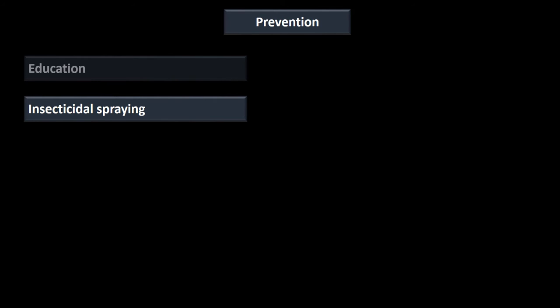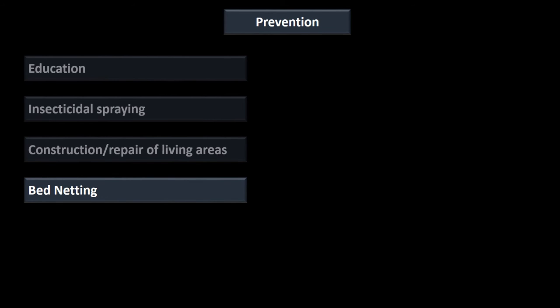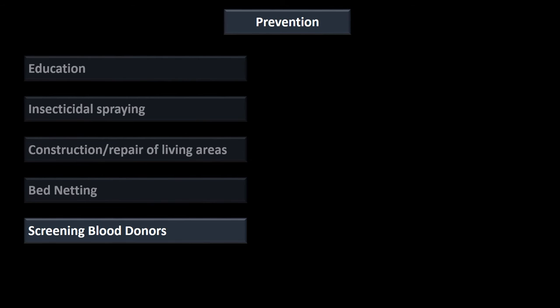Prevention focuses on breaking the chain of infection and limiting exposure to kissing bugs. This includes education, insecticidal spraying to kill the vector, construction and repair of living areas to limit the habitat these bugs can live in, bed netting to limit their nocturnal access, and screening blood donors to ensure the blood supply stays clear of this infectious agent.